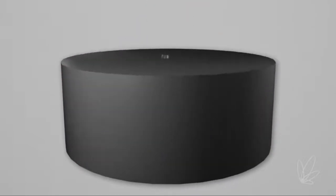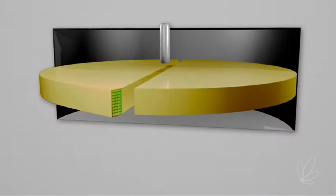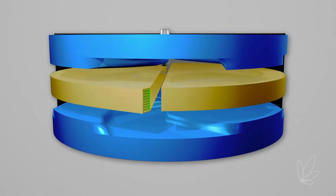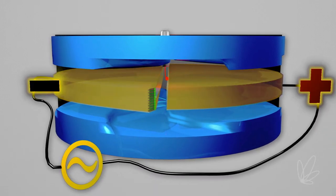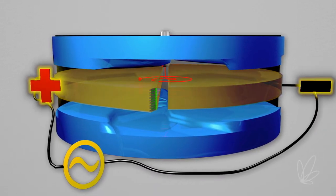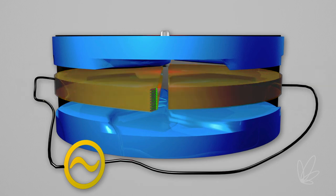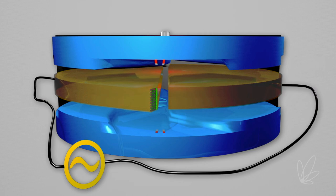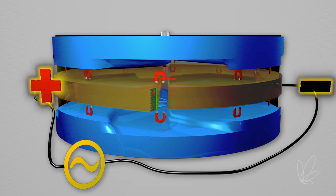A negatively charged hydrogen ion is injected into the vacuum chamber of the cyclotron, where two D-shaped plates are enclosed between the poles of a powerful electromagnet. An alternating positive and negative voltage between the D's attracts and repels the ion in a circular path from one D to the other. The ion gets a boost in energy every time it crosses the gap between the D's, causing it to accelerate. The magnetic field holds the ion within a horizontal plane, causing the ion to spiral toward the outside of the cyclotron as it accelerates.